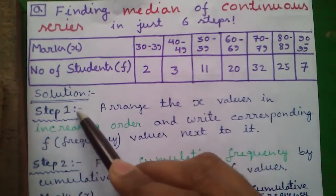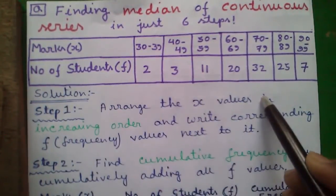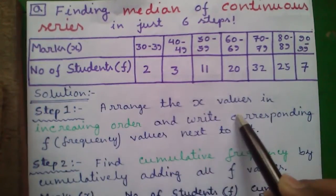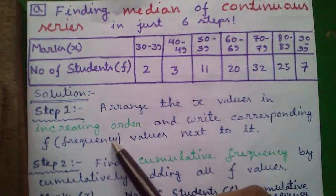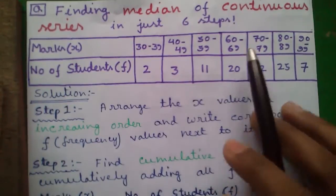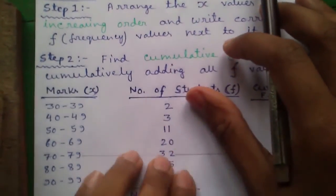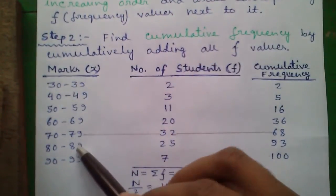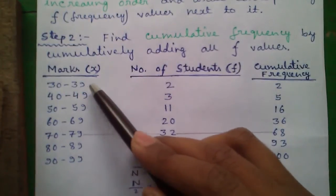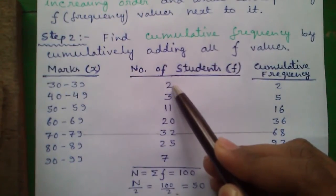So let's proceed to our solution. Step 1: Arrange the x values in increasing order and write the corresponding f or frequency values next to it. f stands for frequency. So x values are written in increasing order and corresponding f values are written next to it.